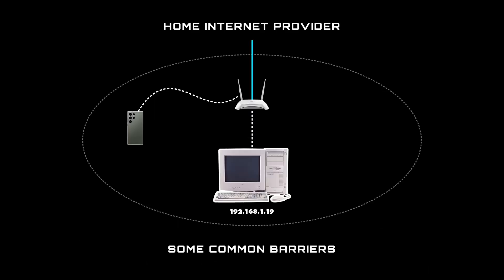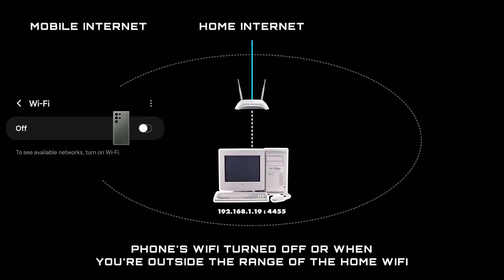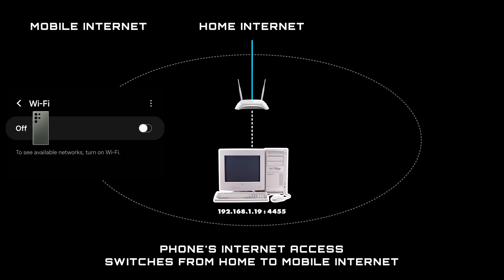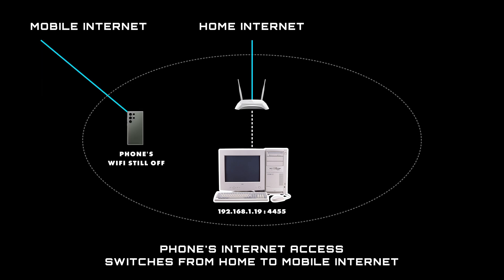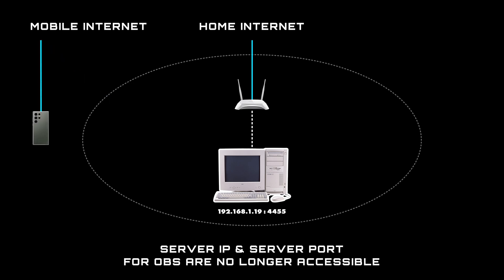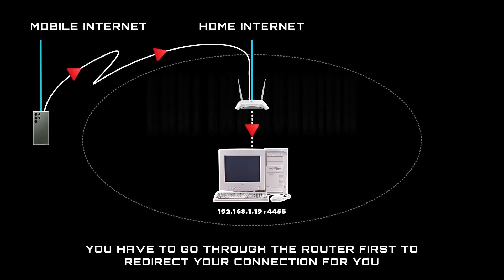Extending this concept to a remote connection isn't too different from what I've just described, but there are a couple of barriers that can get in the way. When you turn off the Wi-Fi on your phone or when you're outside the range of your Wi-Fi router, your internet access switches to a cellular connection from your mobile provider. Your phone is no longer within the same bubble or local network as the home PC, and because of this the server IP and server port that worked before are no longer accessible. To connect to the home PC remotely, you have to go through the router first and have it redirect your connection to the home PC, which is called port forwarding.